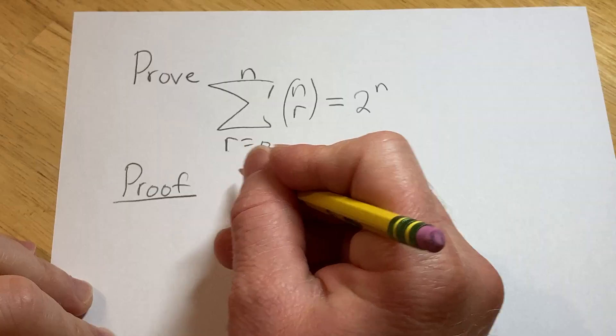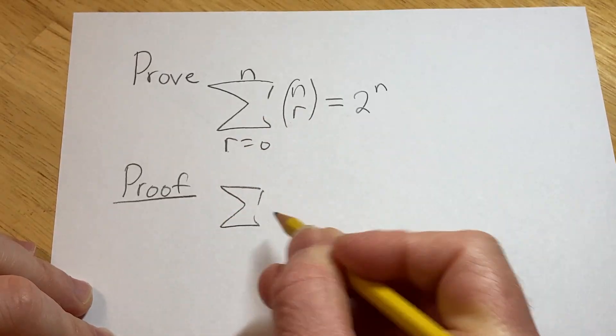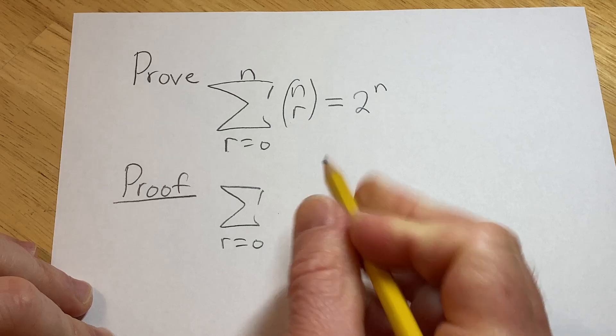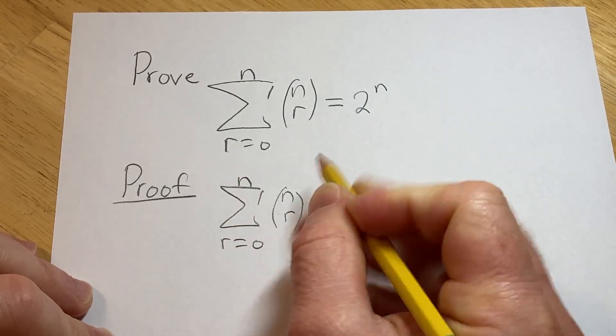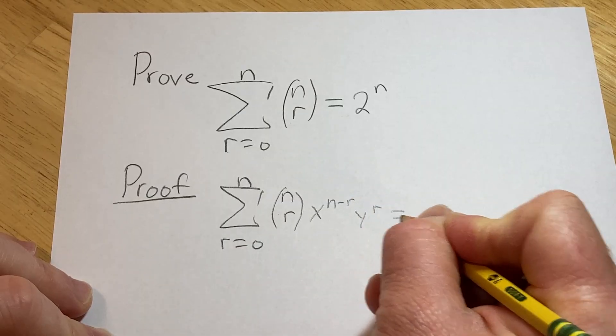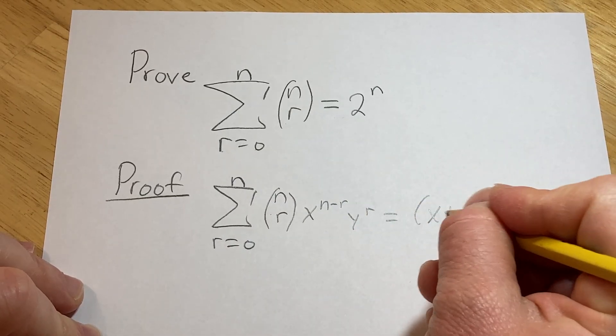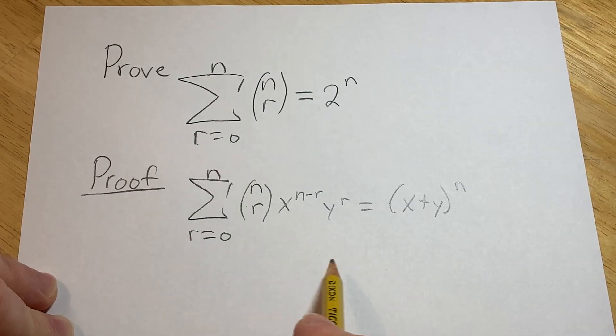So recall that the binomial theorem says if you have the sum as r runs from 0 to n of n choose r times x to the n minus r y to the r, this is equal to x plus y to the n. So this is the binomial theorem.